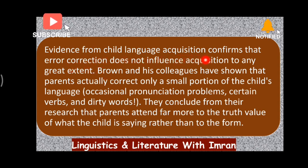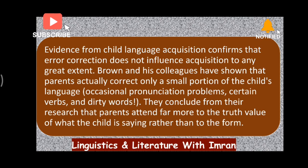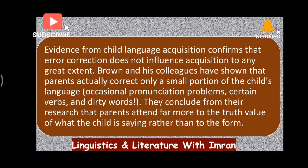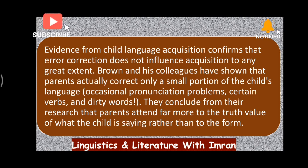Evidence from child language acquisition confirms that error correction does not influence acquisition to any great extent. Brown and his colleagues have shown that parents usually correct only a small portion of the child's language — occasional pronunciation problems, certain verbs, and dirty words. They conclude that parents attend far more to the truth value of what the child is saying rather than to the form. When a child is acquiring a language, parents focus on whether they are saying something true — if a child is making errors, the parents ignore them and do not care about that.